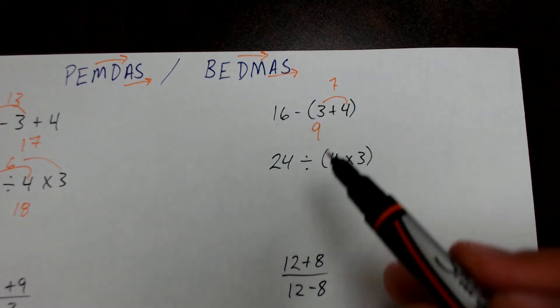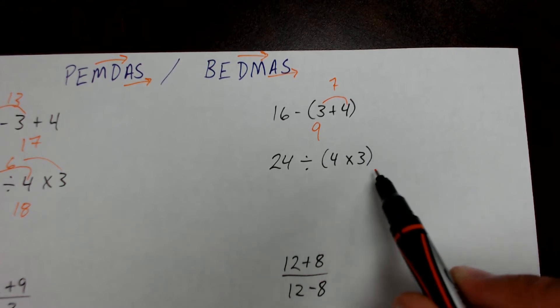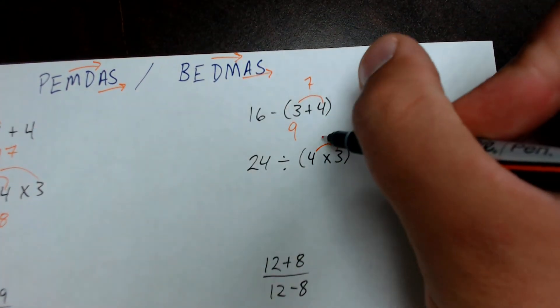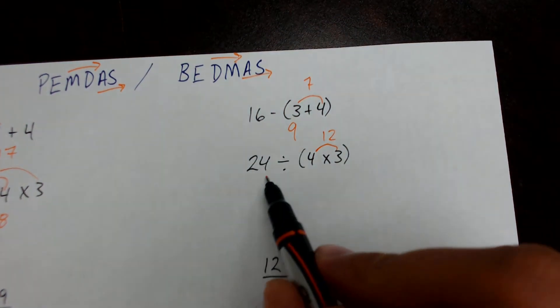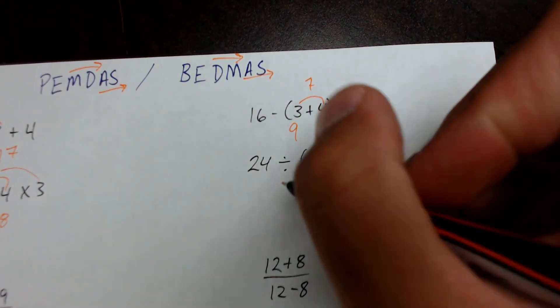And then same thing with this one. 24, I cannot divide by 4 because 4 times 3 is in brackets. So I must do 4 times 3 first, which gives me 12. And then 24 divided by 12, which gives me 2. So my final answer here is 2.